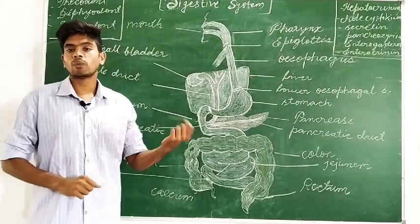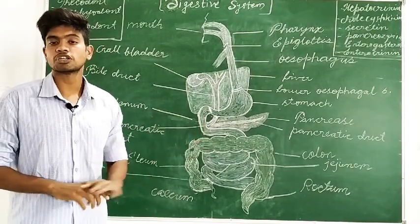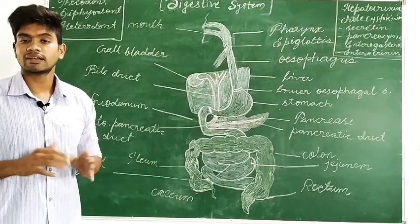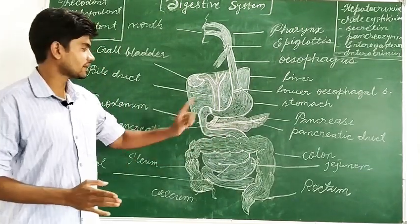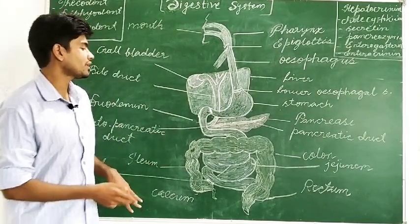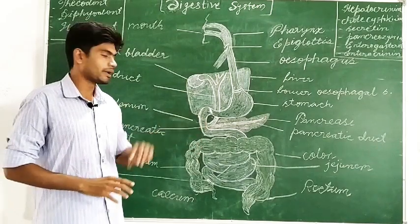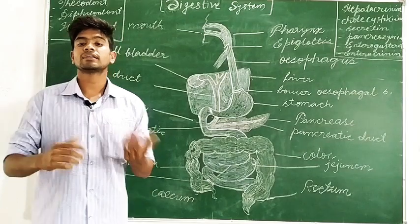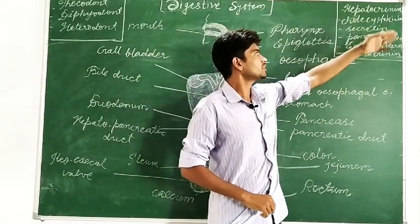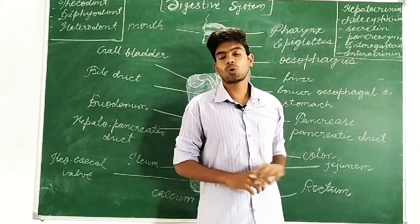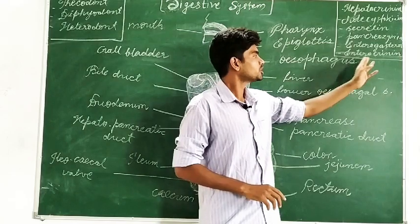The difference between chyme and chyle: chyme was acidic because it was mixed with HCl, but chyle is alkaline because it has been mixed with alkaline juices — Brunner's gland secretion, bile juice, and pancreatic juice. When the chyme enters the duodenum, the HCl stimulates the mucous membrane to secrete six enzymes: hepatocrinin, cholecystokinin, secretin, pancreozymin, enterogastrone, and enterocrinin.